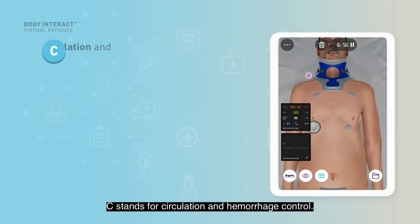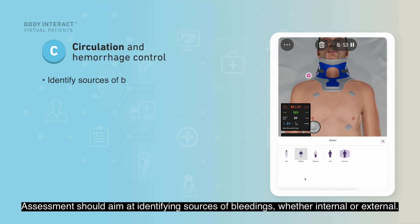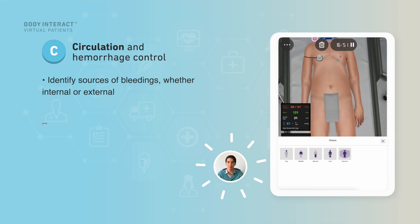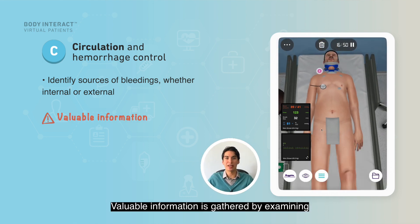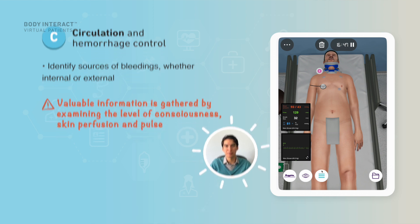C stands for circulation and hemorrhage control. Assessments should aim at identifying the source of bleeding, whether internal or external. Valuable information is gathered by examining the level of consciousness, the skin perfusion, and pulse.